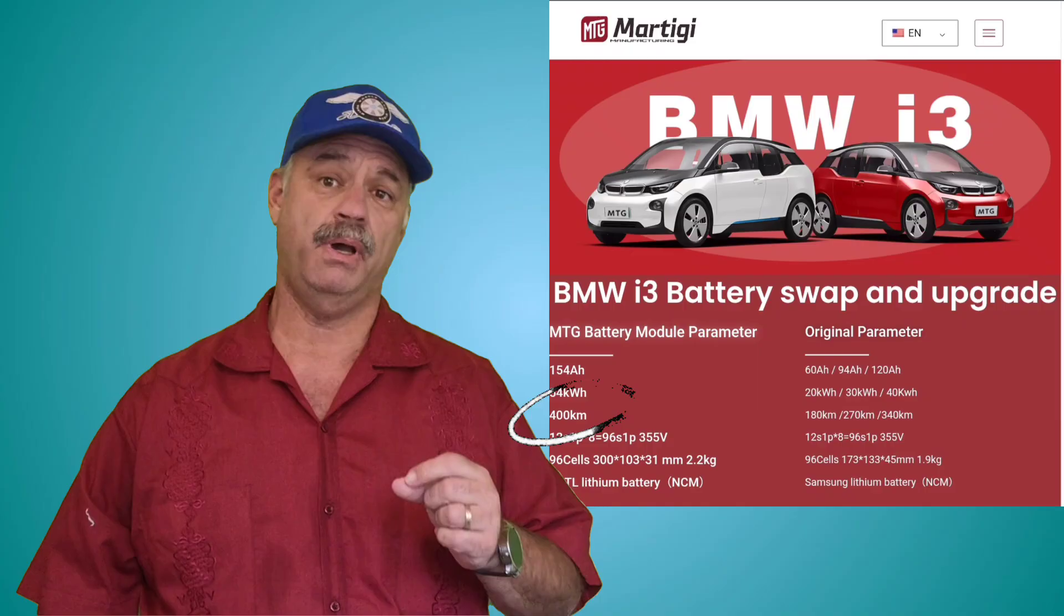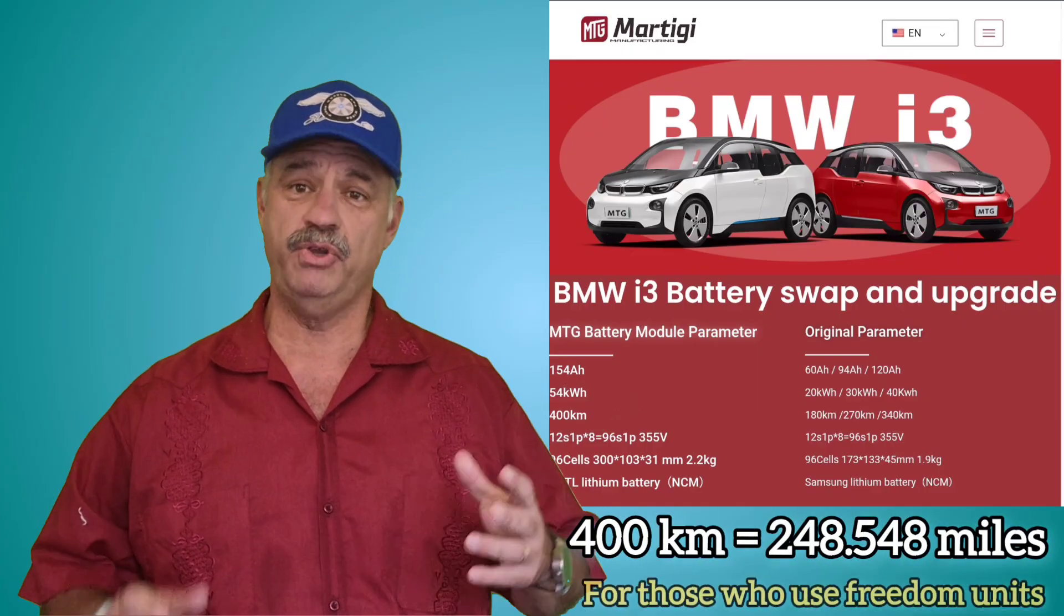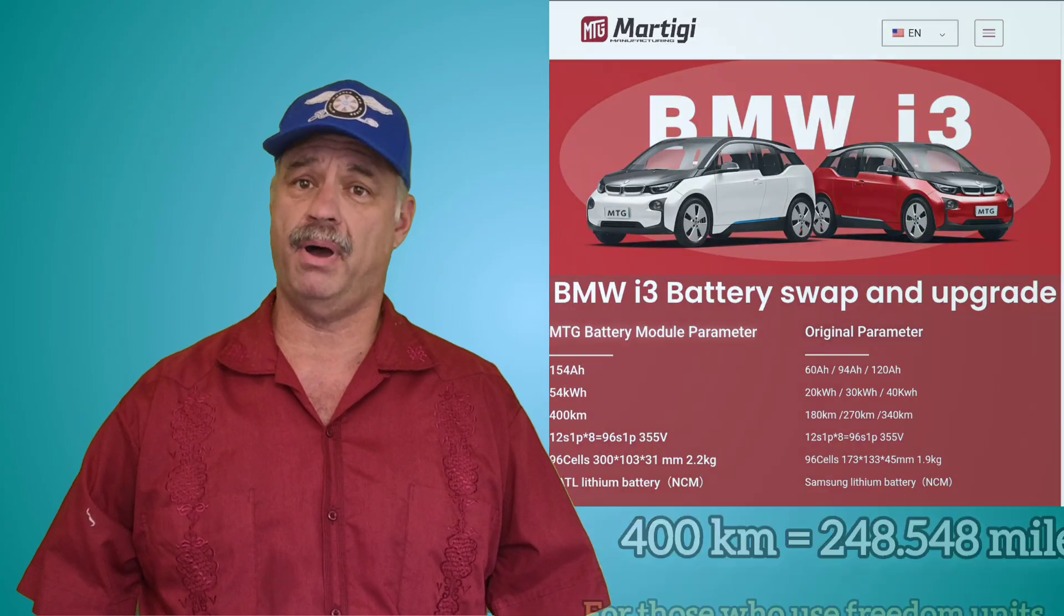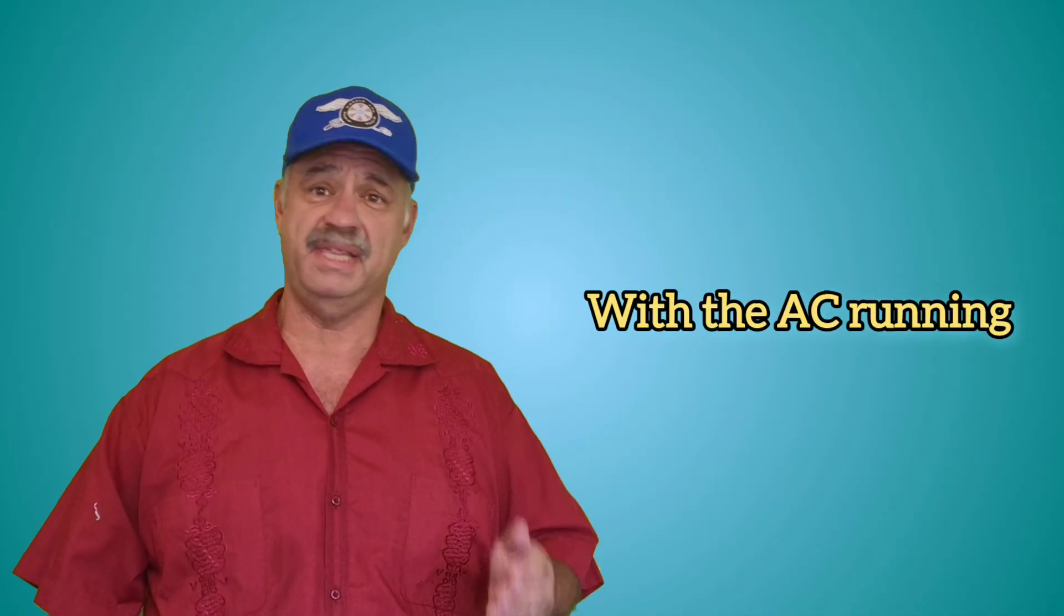Now, how much range does it get? Well, that depends on what source you choose to trust. They claim 248 miles of range, which would put this battery pack on par with a brand new Mercedes EQB or ID Buzz. Unfortunately, the only evidence that we have to either support or disprove this claim is a video of the vehicle achieving 186 miles of range, driving at a sustained 62 miles per hour. But this is still a huge improvement over the i3's best range of 153 miles.